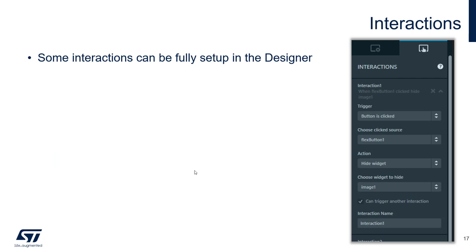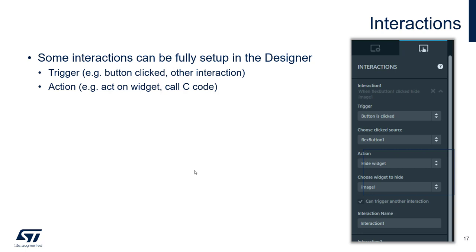Interactions can be fully set within the designer tool. An interaction consists of a trigger first — such as a button click or another completed interaction — followed by an action on a widget: hide a widget, show a widget, go to next screen. But it can also call C++ source code; in this case, it will create the function body but you will have to provide the actual implementation with your own behavior, meaning this interaction will not be fully set up in the designer — part of it will have to be done in your external IDE.